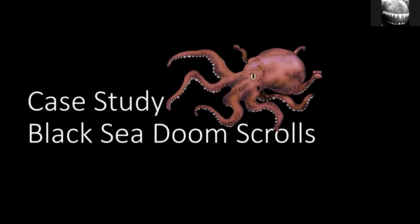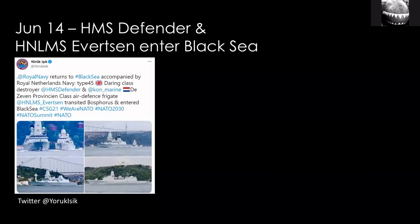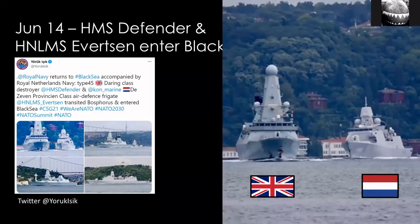The best example — the one most people think of — happened in the Black Sea earlier this year. It all started when a carrier battle group centered on HMS Queen Elizabeth, the Royal Navy aircraft carrier in the middle, entered the Mediterranean in June as part of a world tour. Quite soon, two of the escorting ships — HMS Defender, a British warship, and the Dutch warship Evertsen — peeled off and went into the Black Sea to visit various allies.